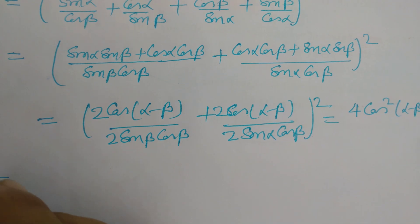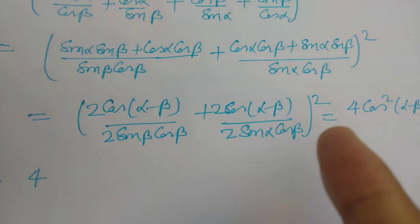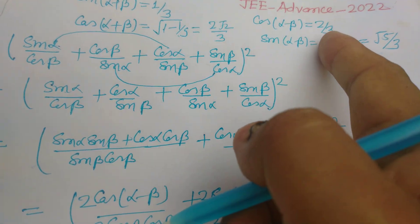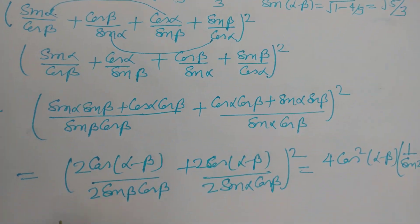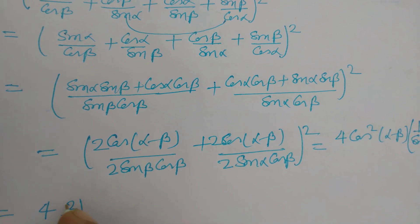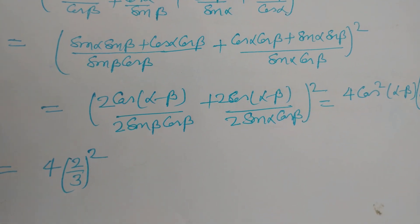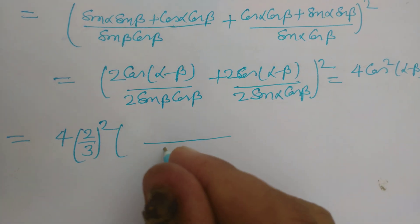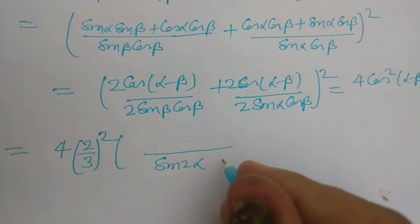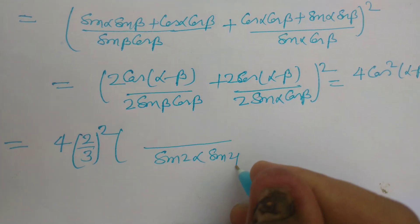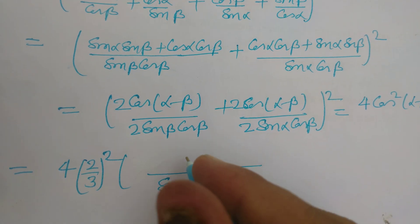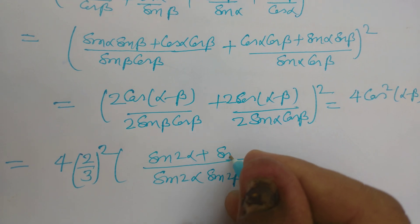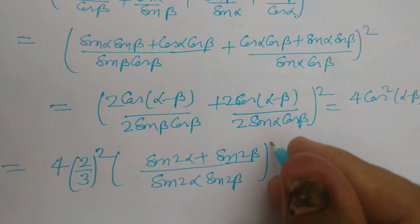Now the value of cos(α-β) is given here. This is 2/3, so we put the value: 2/3 whole squared. And now solve it: sin 2α sin 2β here, [sin 2α + sin 2β]².